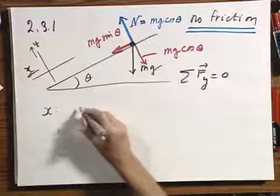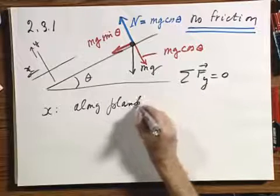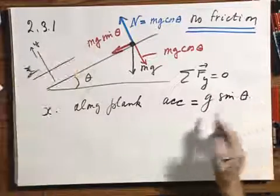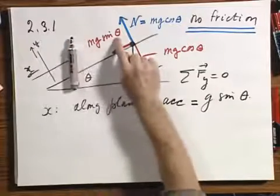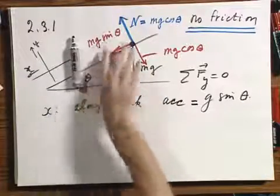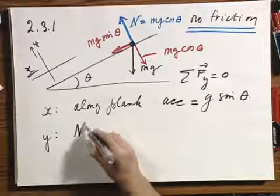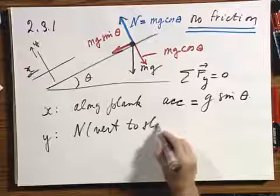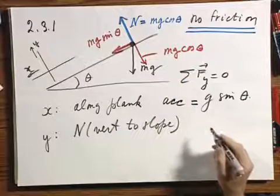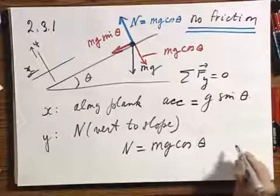Let's now look in the x direction — that is along the incline. The acceleration along the incline is g sine theta. If the plank were vertical, if theta equals 90 degrees, you would have an acceleration g, which is completely consistent with your intuition. The lower you make theta, the lower the acceleration becomes. In the y direction, n — which is perpendicular to the slope — is the reaction force from the slope onto the object, and we know n equals mg times the cosine of theta.